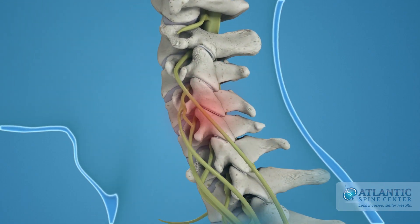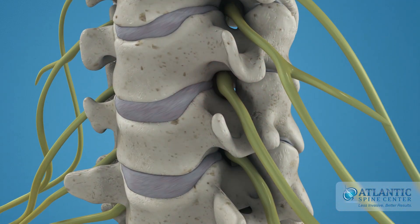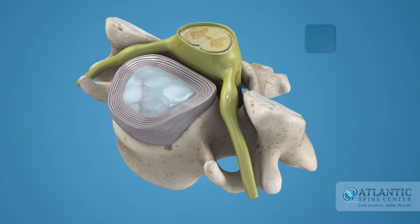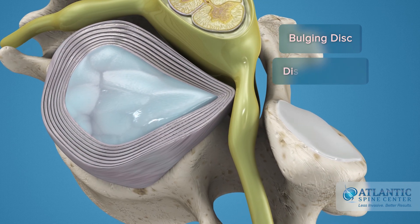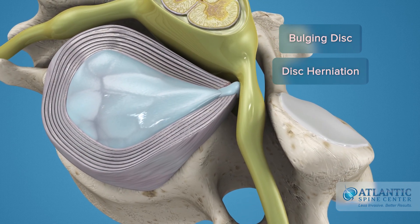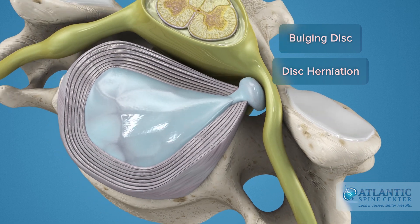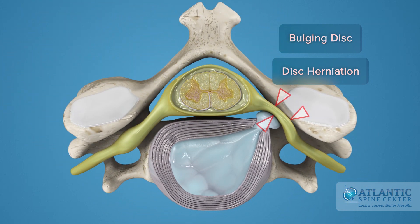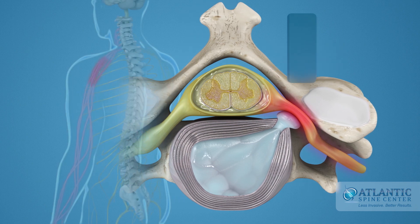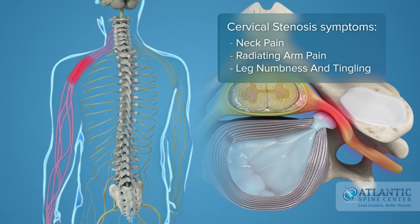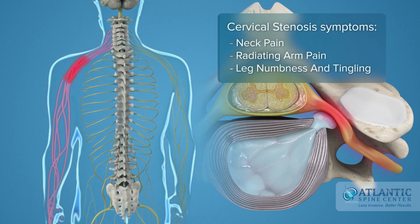Neck pain is one of the most common spine problems. As we age, our spines change. Degenerative effects of aging can lead to intervertebral disc bulging and herniation. Nerve roots, and sometimes the spinal cord itself, can be squeezed, which can irritate the nervous system. This condition is called spinal stenosis. Cervical spinal stenosis symptoms include neck pain, often with radiating arm pain, numbness or weakness, and tingling.